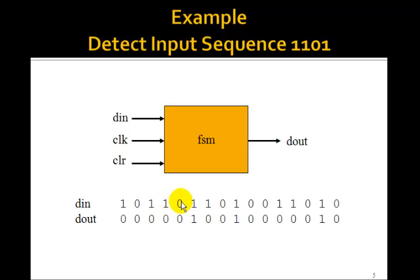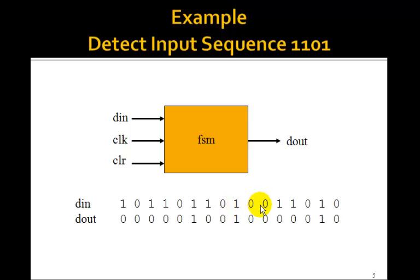As soon as we detect the sequence 1,1,0,1, D out goes to 1. Now the sequences can overlap, so this last 1 can serve as the first 1 of the next sequence 1,1,0,1, and we get another 1 out. Then we get 0,0,1,1,0,1 and we detect it again. So D out goes to 1 as soon as we detect the sequence 1,1,0,1. That's what we want to do.